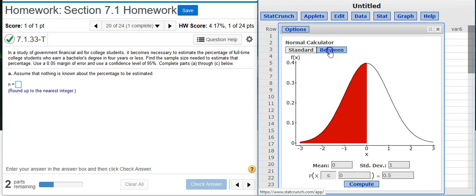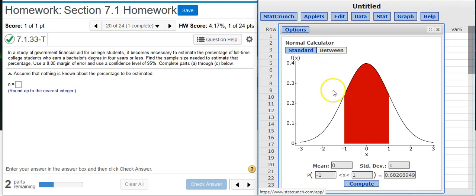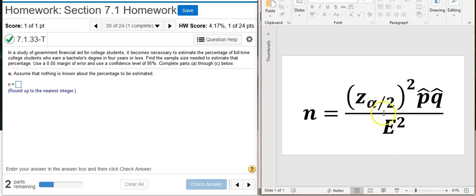I'm going to select the between option here because we want a z-score coming from two tails, and the reason why I know that is because if I go back and look at my equation, I've got z alpha over 2. That means only half of the alpha is in the right tail of my distribution, so there must be another half in the left tail of the distribution.